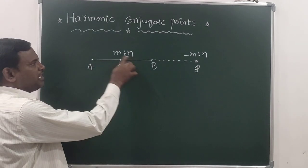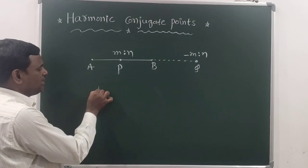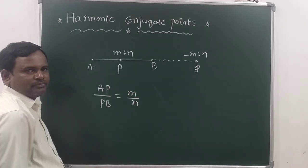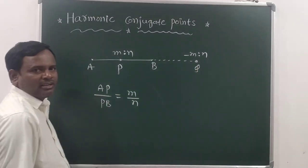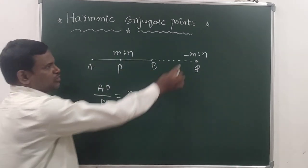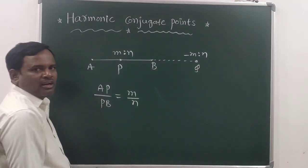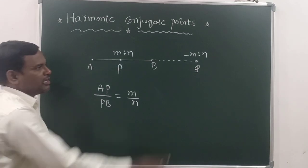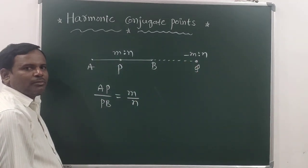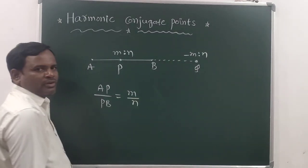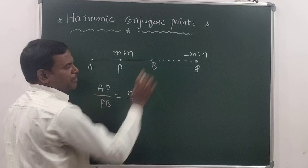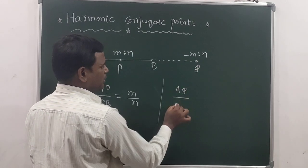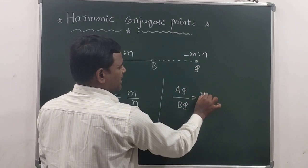Here, P is dividing AB in the ratio M to N, which means AP by PB is equal to M by N. And Q is dividing AB in the ratio minus M to N, meaning Q is on the extended portion of AB, so we represent it with minus M to N. This means AQ by BQ is equal to M by N.